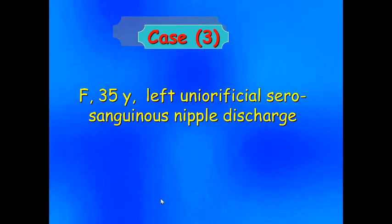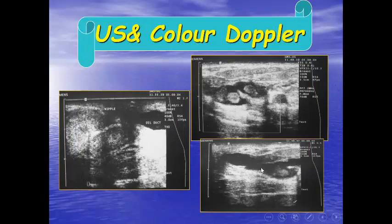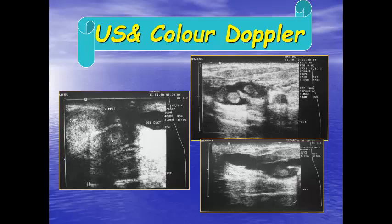Another case: a 35-year-old with left uni-orificial serosanguinous nipple discharge. Galactography shows the duct with a regular outline, and no filling defects are identified. On ultrasound, this is the typical appearance of inspissated secretions: ball-like, echogenic, non-dependent, and not attached to the wall. To confirm inspissated secretions, you can assign BIRADS 3 for close follow-up, or ask the patient to squeeze her breast — the inspissated secretions will change in position. Palpation with the probe also changes their appearance.